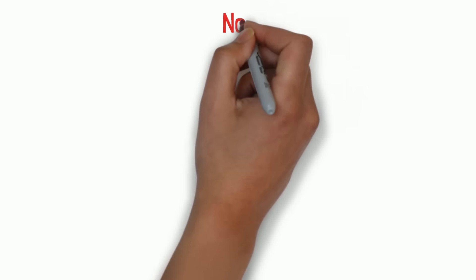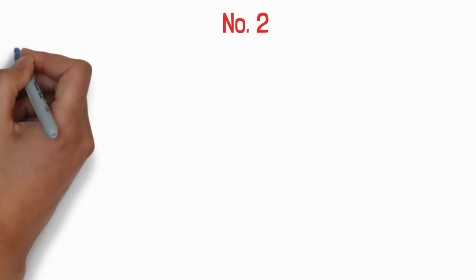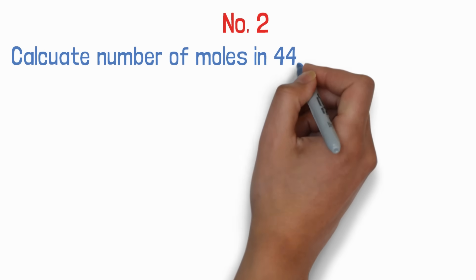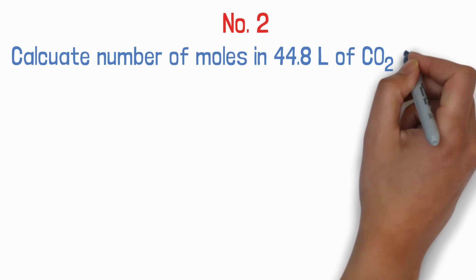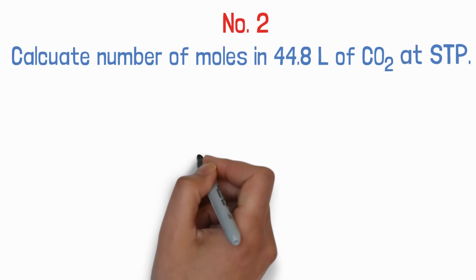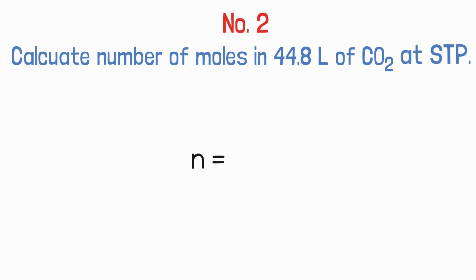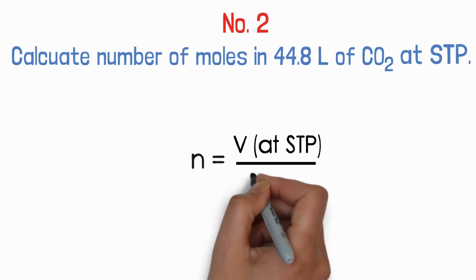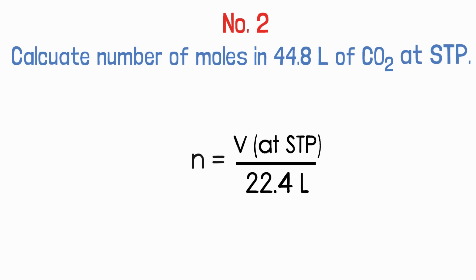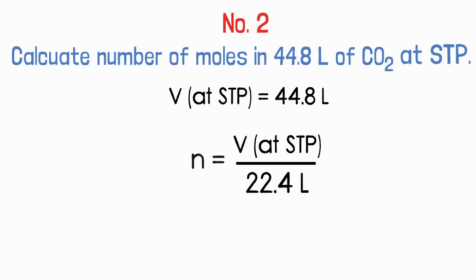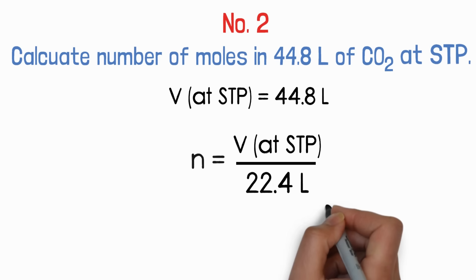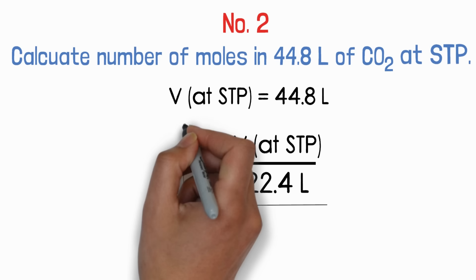Next question: calculate number of moles in 44.8 litres of carbon dioxide at STP. We will use n = V at STP / 22.4. The volume at STP in this question is 44.8 litres — just put it in and calculate the number of moles.